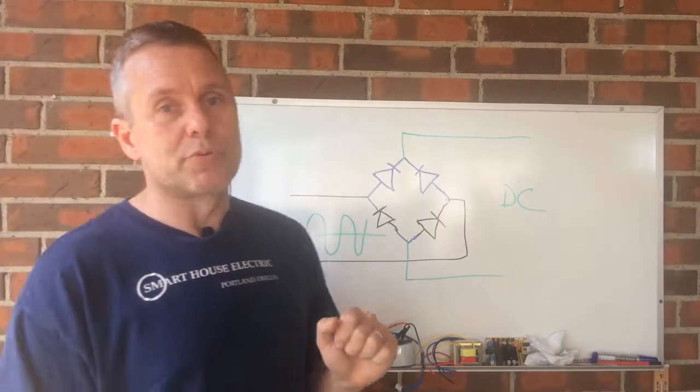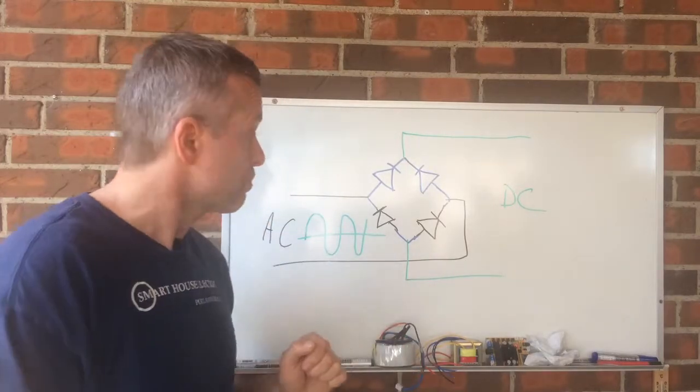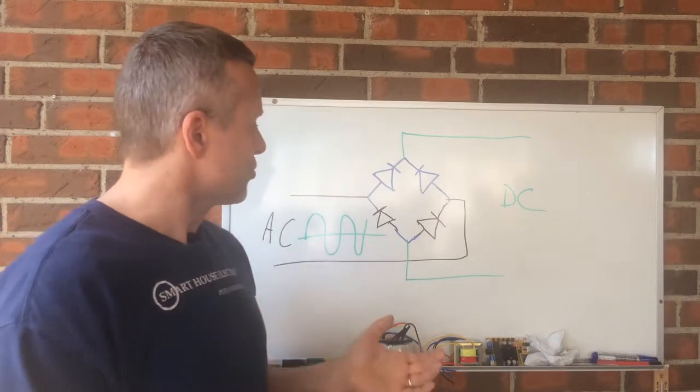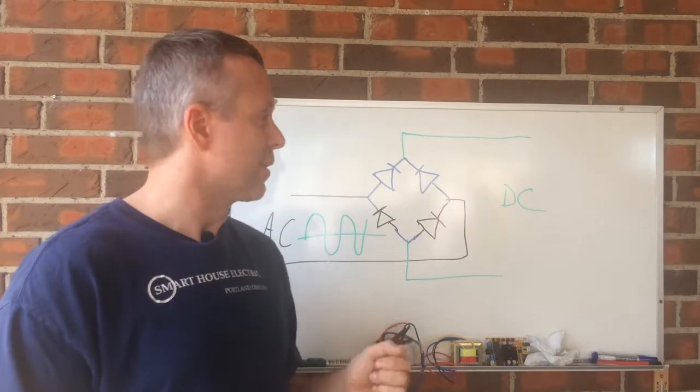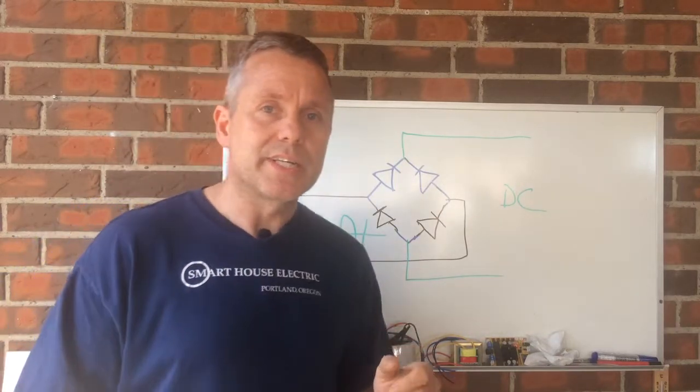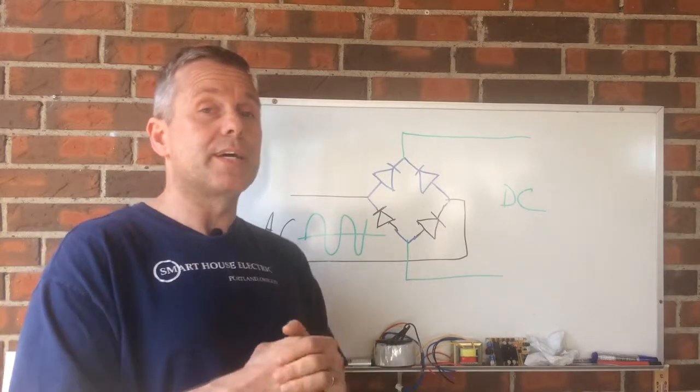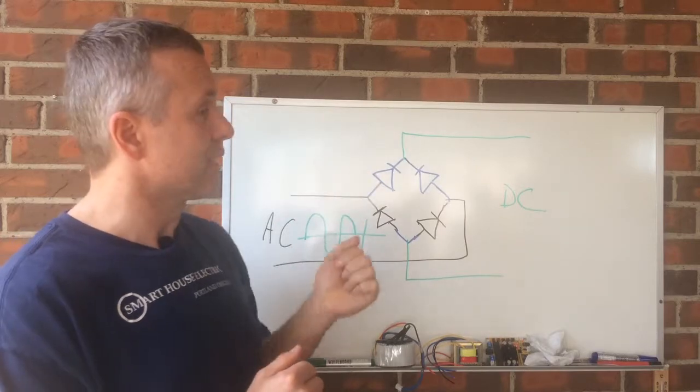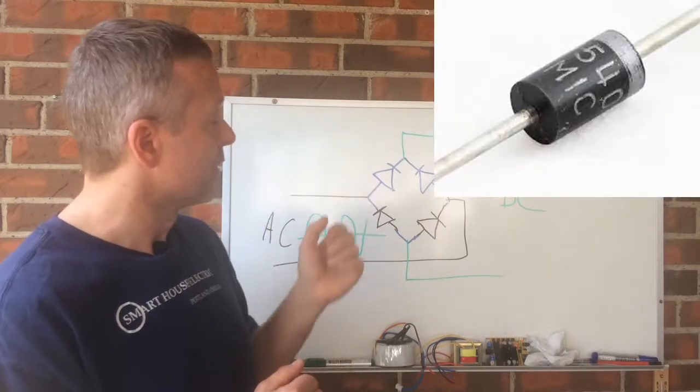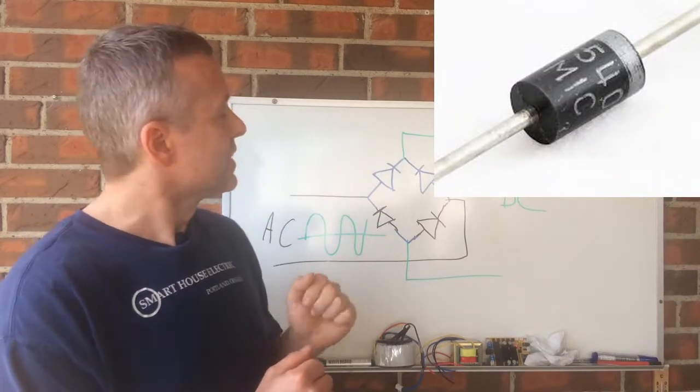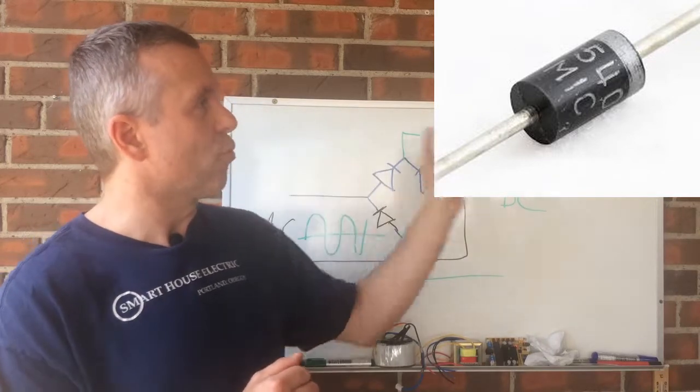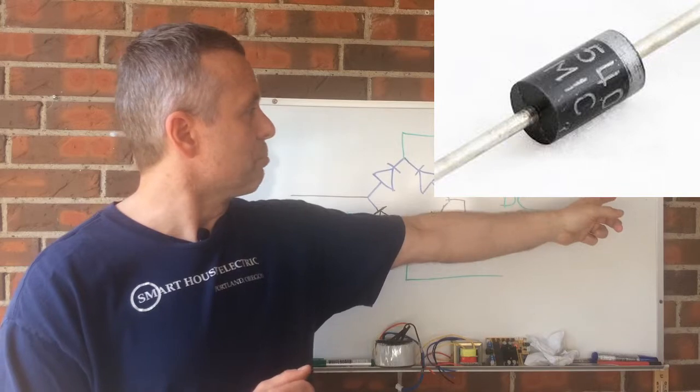So that motor needed to be DC. And so this bridge rectifier that we see here, what it does is it's using diodes. Diodes are components - let me show you a diode, like an individual diode right here. And this thing can only run power through it one way. It will actually block from the other direction.